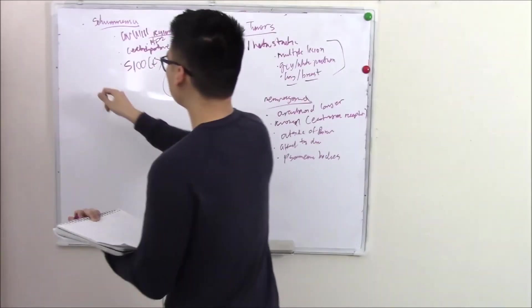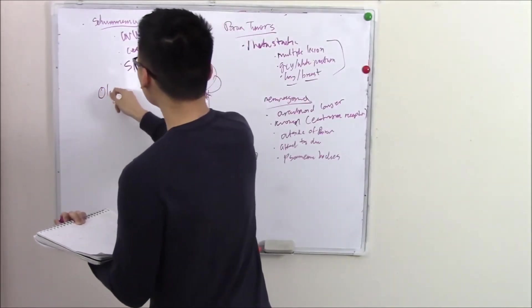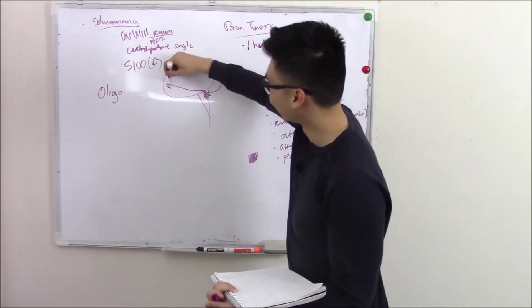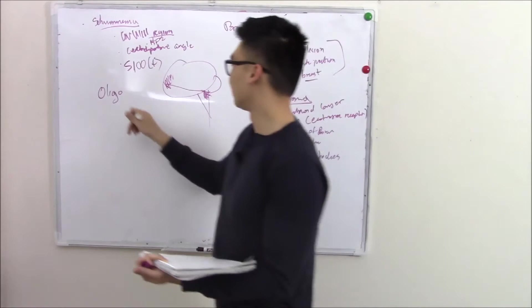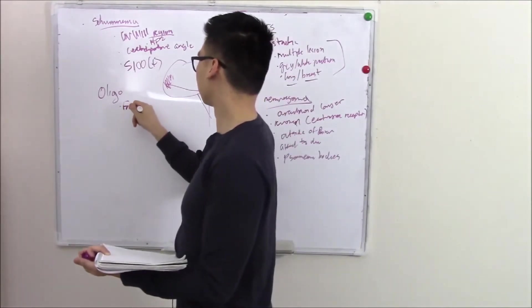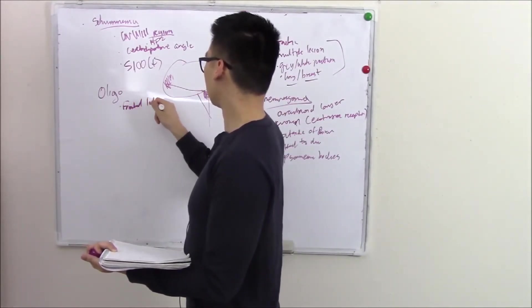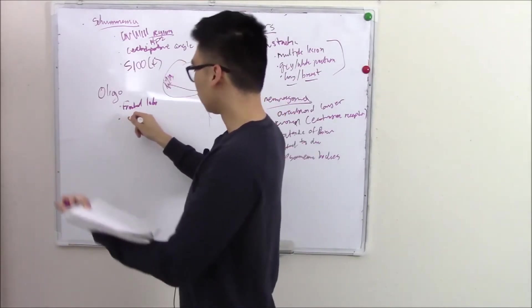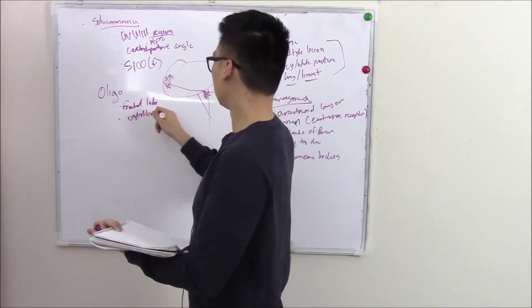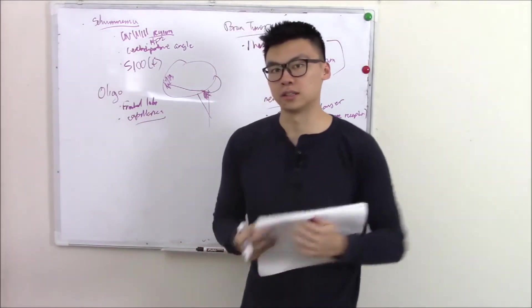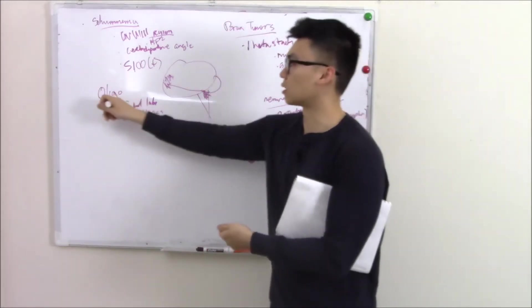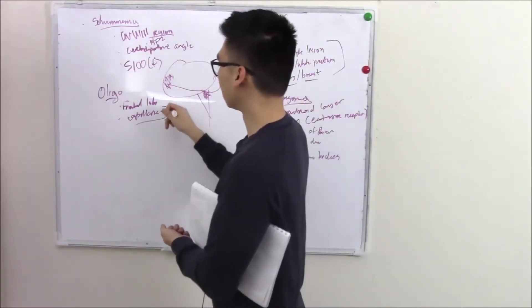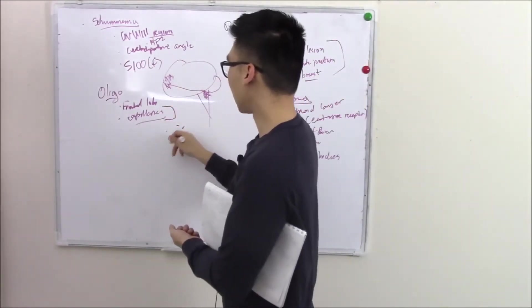How about your oligodendrocytes? So oligodendroglioma, these like to affect basically the opposite side, your frontal lobe. Frontal lobe. So grossly, you'll see a frontal lobe lesion. Microscopically, there seems to be a lot of capillaries near these clusters of mutated oligodendrocytes. So capillaries is a big sign microscopically. See a ton of these red capillaries.